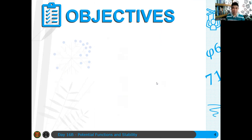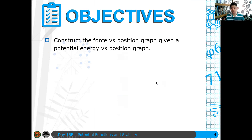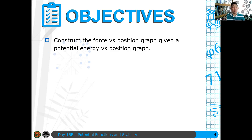Here are the objectives of this discussion. At the end of this session, you should be able to first construct the force versus position graph given a potential energy versus position graph. This is reminiscent of our graphical analysis in the previous exam coverage — recalling how we derived velocity-time graphs from position-time graphs, but now with some extra steps.